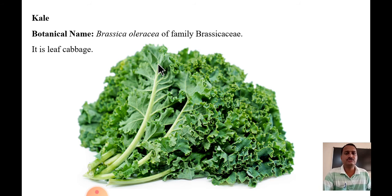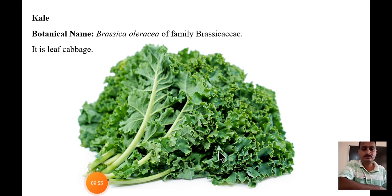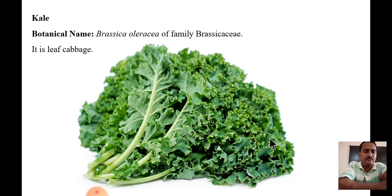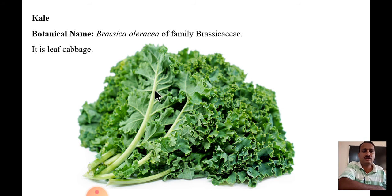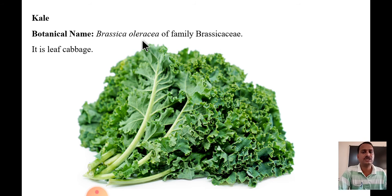The next topic is Kale. The botanical name of kale is Brassica oleracea. It belongs to the family Brassicaceae. Kale is a whole leaf cabbage — it is a modification from wild cabbage, with a wavy or curled leaf structure. The leaf part is mostly what is used. Please remember the scientific name is Brassica oleracea.